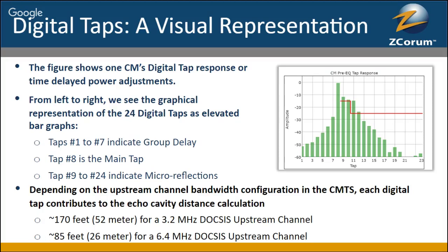A little bit more about the graph on the far right: elevated taps 9 and 10 are typically an indicator of near-home or in-home issues. Elevated taps beyond that, all the way to 24, will probably give you an indication of an outside plant issue.